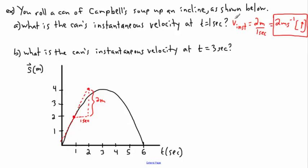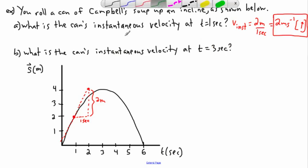The direction is up, so the instantaneous velocity at t = 1 second is 2 meters per second up. Notice how it changes depending on which point you pick. Now, what is the can's instantaneous velocity at t = 3 seconds?